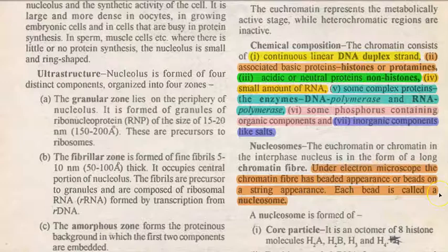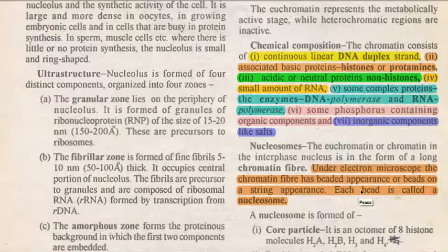Next, we look at what is meant by nucleosomes. The chromatin in an interphase nucleus is in the form of a long chromatin fiber. Under the electron microscope, the chromatin fiber has a beaded appearance, or bead-on-a-string appearance. Each bead is referred to as a nucleosome.